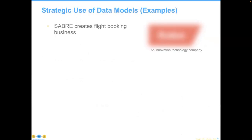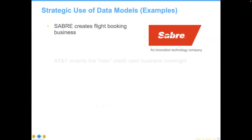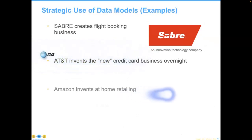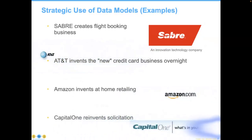Other uses of strategic data models include the Sabre creation of the flight booking process, AT&T inventing a new credit card business literally overnight, Amazon selling satisfaction and overnight delivery, and Capital One reinventing solicitation. Each of these are very much database-centric approaches. The actual data at the center was considered organizational property at the highest level of security.